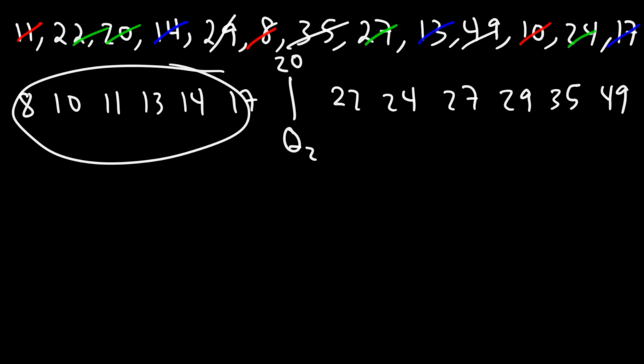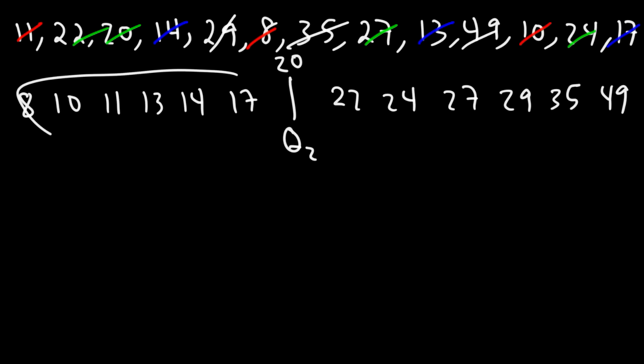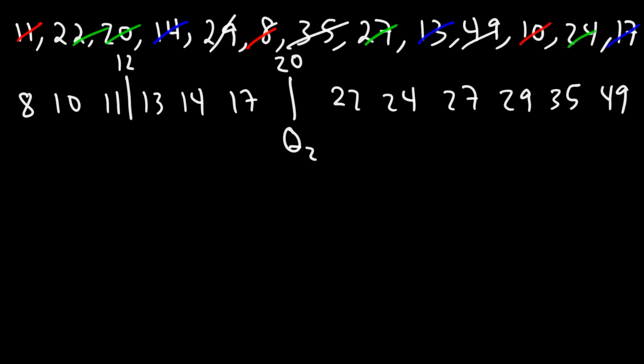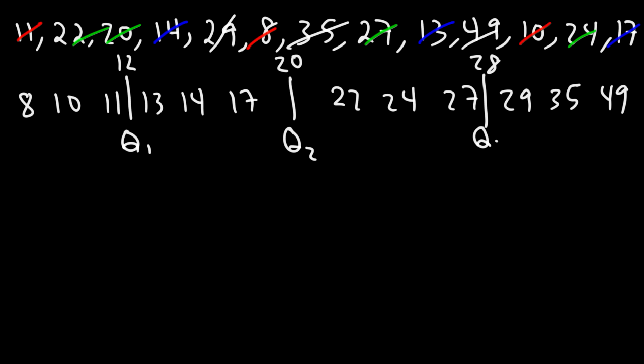Now I have two equal parts of data — six numbers on the left side and six numbers on the right side. I need to find the median of the lower half. If I eliminate the first two and the next two, I have two numbers in the middle, so the median is the average of those two numbers. The average of 11 and 13 is 12 — so this is Q1, the first quartile. The average of 27 and 29 is 28 — so that's Q3, the third quartile.